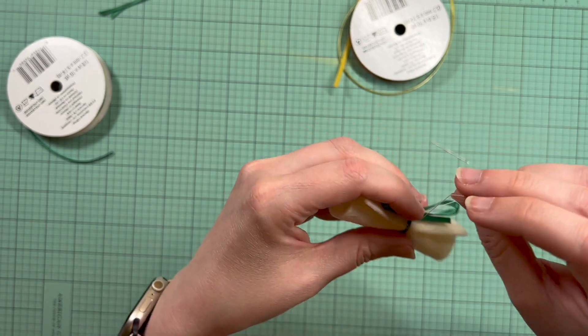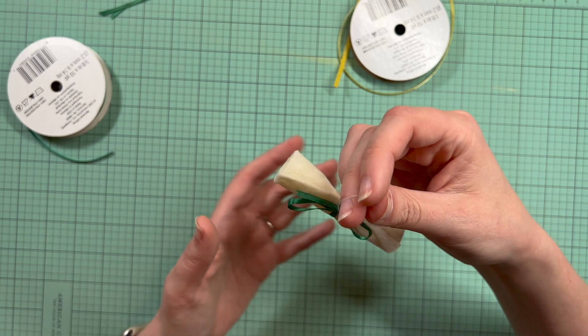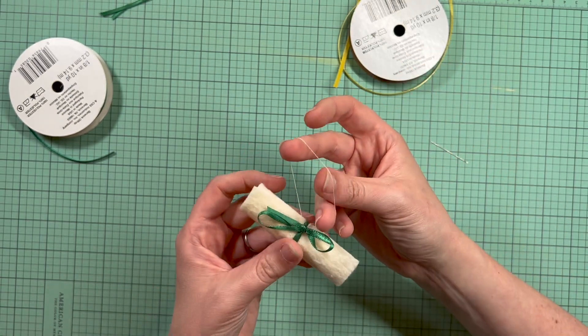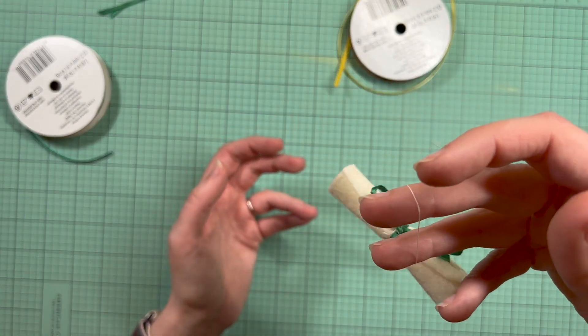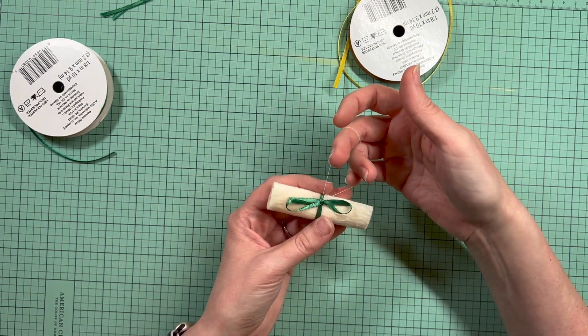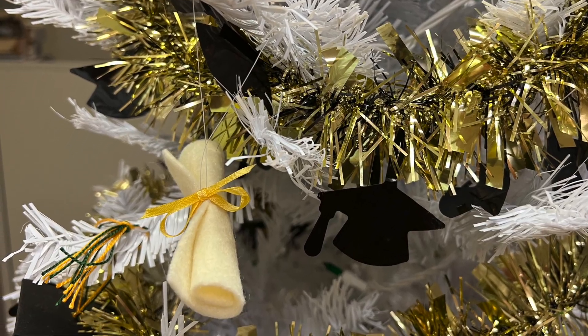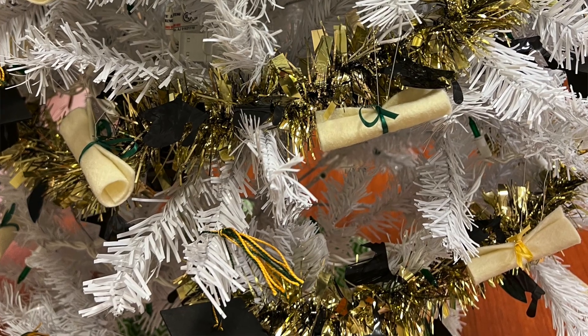You don't have to do this. And I also wanted to do it this way with this white thread, because then it will be more hidden in my tree. You won't really be able to see this white thread. You'll just see the little diplomas hanging there. And so I think that turns out really cute. I think these are going to look so good on my tree. They're perfect for graduation and I think they're just really fun.